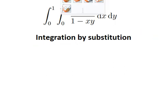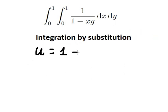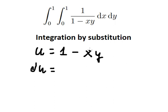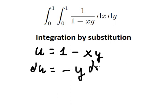We'll use integration by substitution. I will set u equal to 1 minus xy. Since this is with respect to dx, when we take the first derivative of both sides, the constant gives zero, and we get du equals negative y dx.